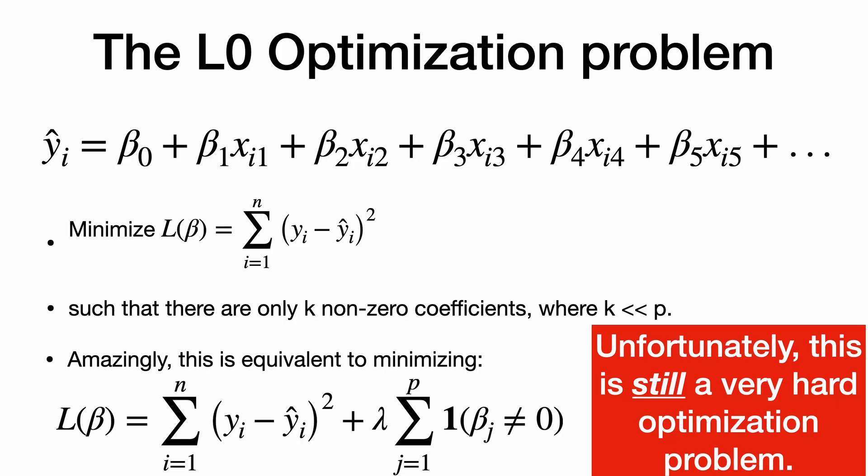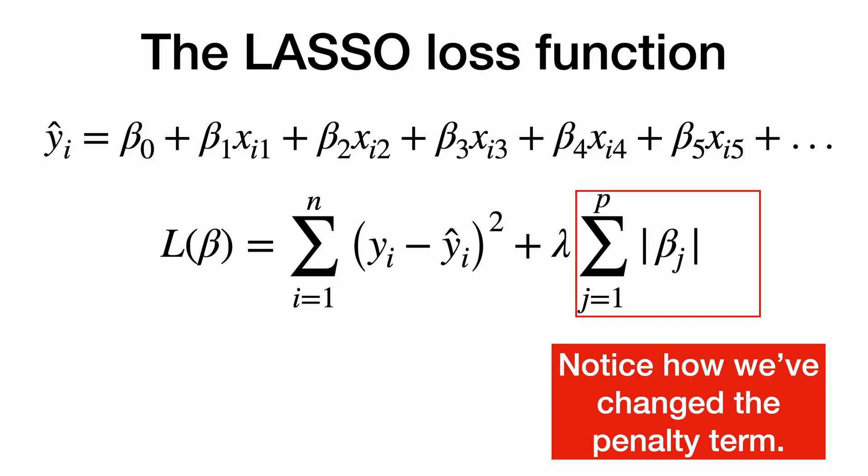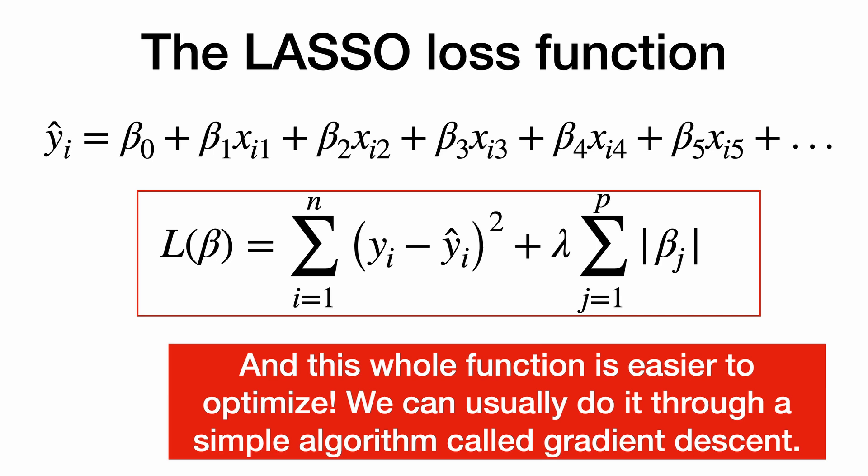Unfortunately, this is still a very hard optimization problem. Let's try something else. The lasso loss function uses a different penalty. Notice how we've changed the penalty term. This is called the L1 penalty instead of L0.